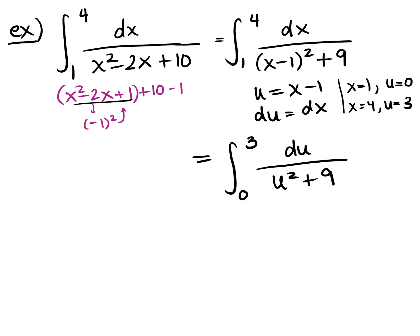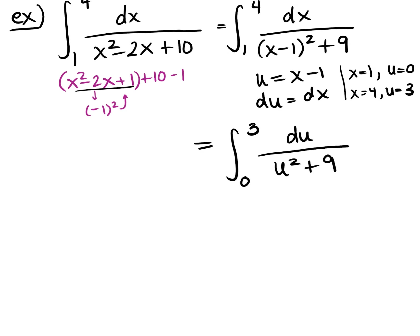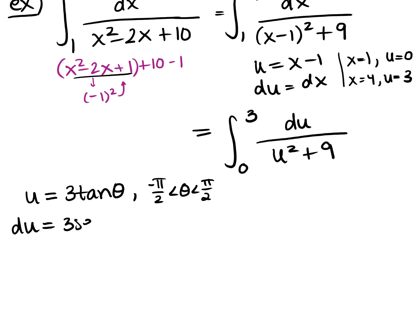This actually gives us u² + 9, which is a trig sub form. With u-sub first: let u = x - 1, du = dx. Bounds change: when x = 1, u = 0; when x = 4, u = 3. Now the integral from 0 to 3 of du/(u² + 9) — this is actually just tangent inverse, but let's run through the trig sub.